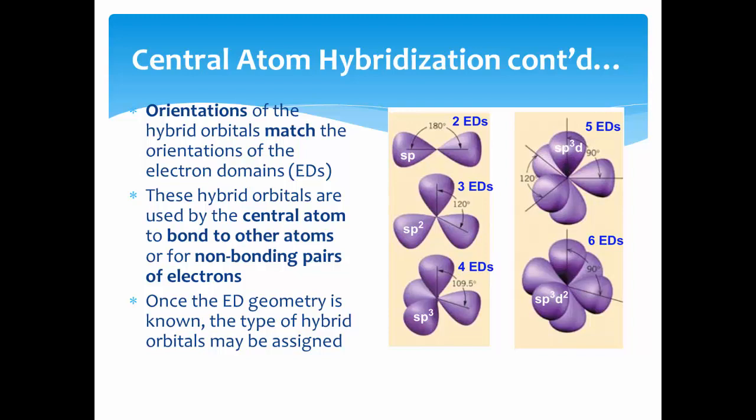For example, if you have three electron domains, you know you have three sp2 hybridized orbitals.